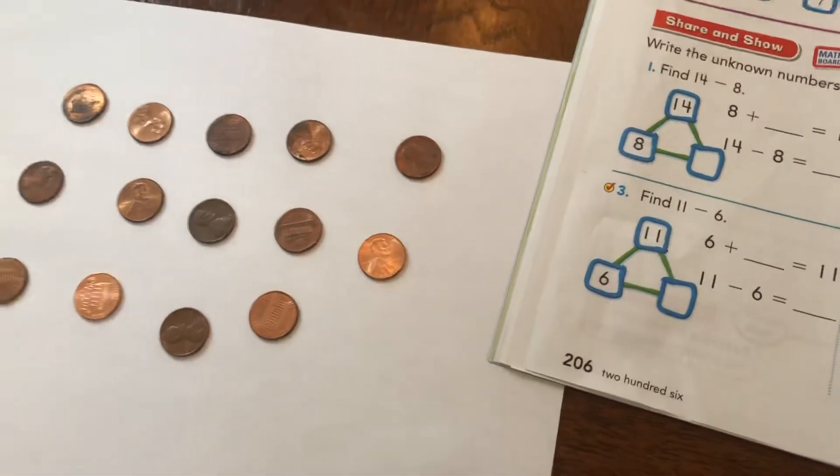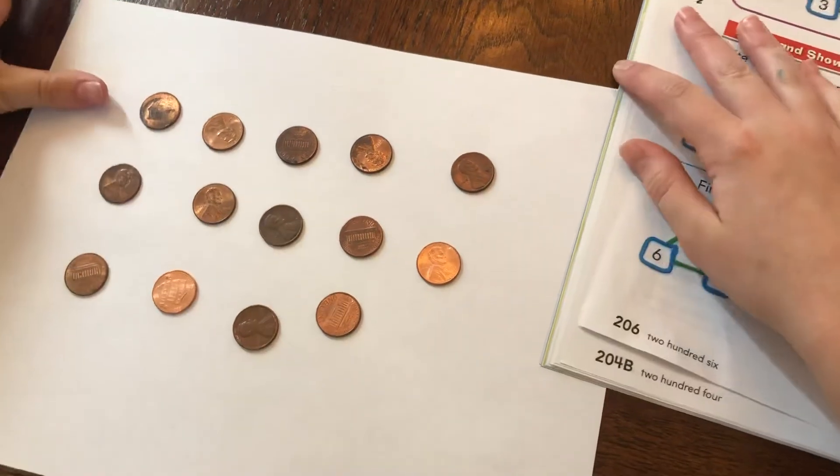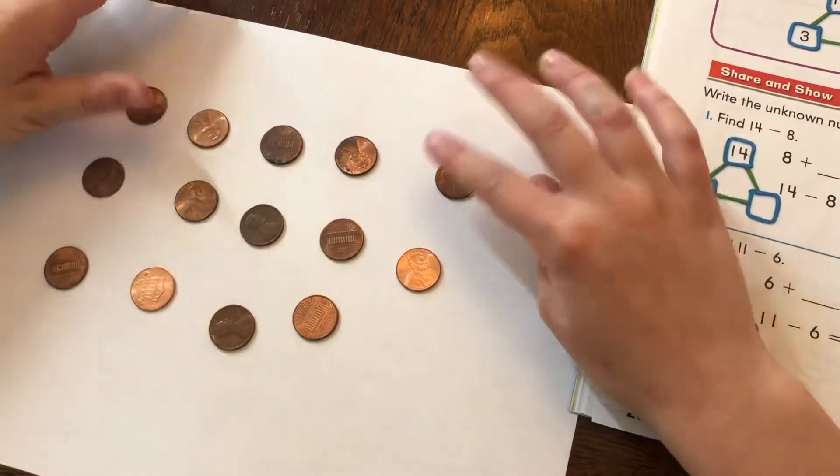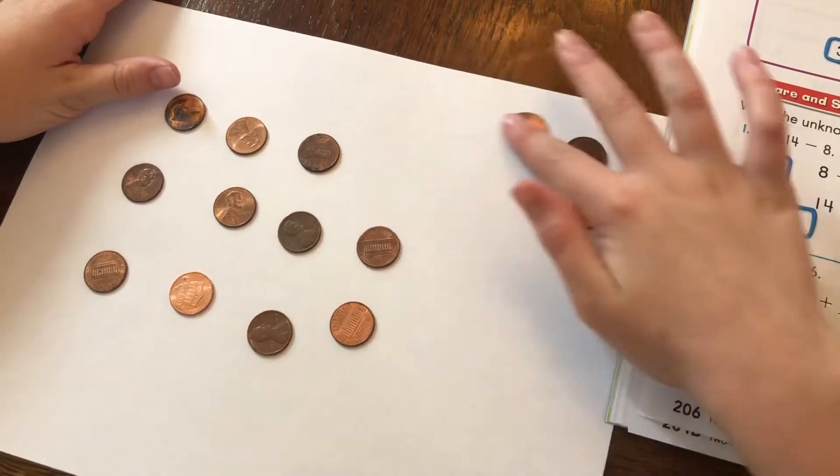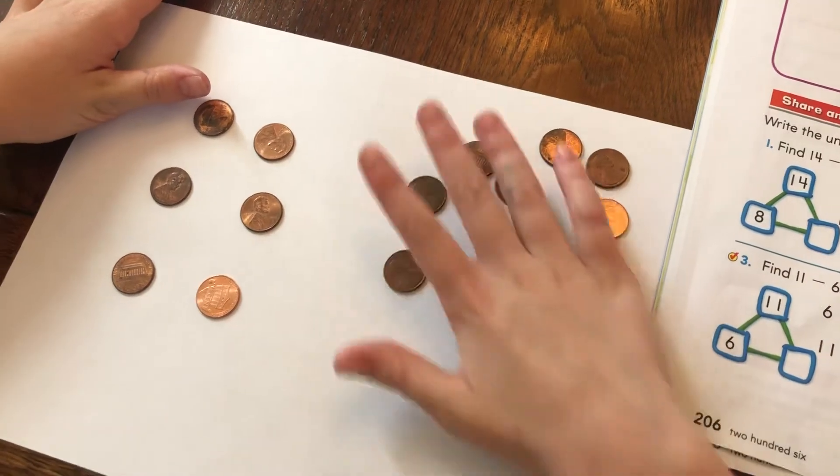Okay. I'm going to do a subtraction because I think that's the easiest way because you can't color in pennies. Okay. So let's take away 8. 1, 2, 3, 4, 5, 6, 7, 8.